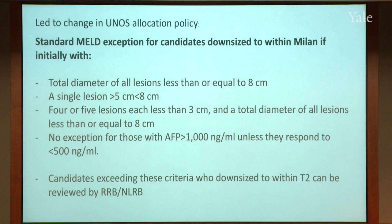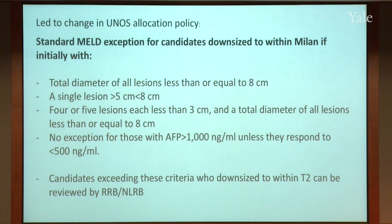This led us to change the entire national allocation policy. Instead of just the exception for rising priority for those within Milan criteria, we can now take patients downsized to within Milan criteria using local regional therapy — with one exception: you have to achieve an alpha-fetoprotein less than 500. Studies show that higher AFP means greater likelihood of metastatic disease appearing later, which would not meet the futility rule, and you wouldn't want to use organs for those individuals.